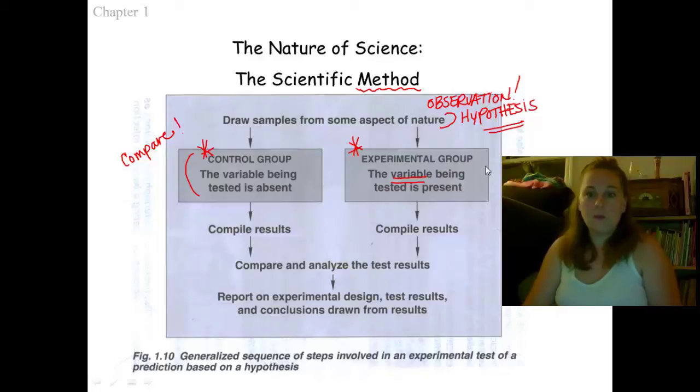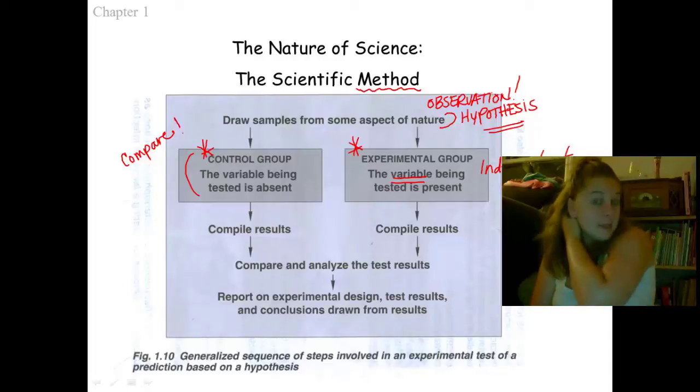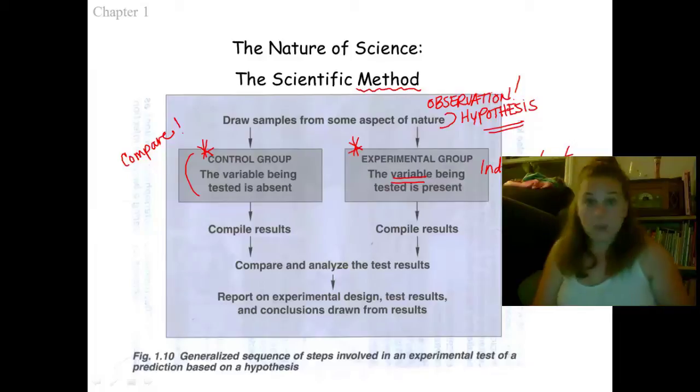So the only thing I want to make sure I change is the amount of light that I'm using. That's what we refer to as the independent variable—what am I going to change? That one thing, in this case light. Light is my independent variable. Everything else, all other variables, must be the same. I want to make sure that the type of soil I use is the same, the type of plant is the same, how long they're in the light or in the dark, how much water I give and when I give it, the temperature—all of these things have to remain the same. The only thing I want to alter is the amount of light between my two groups.